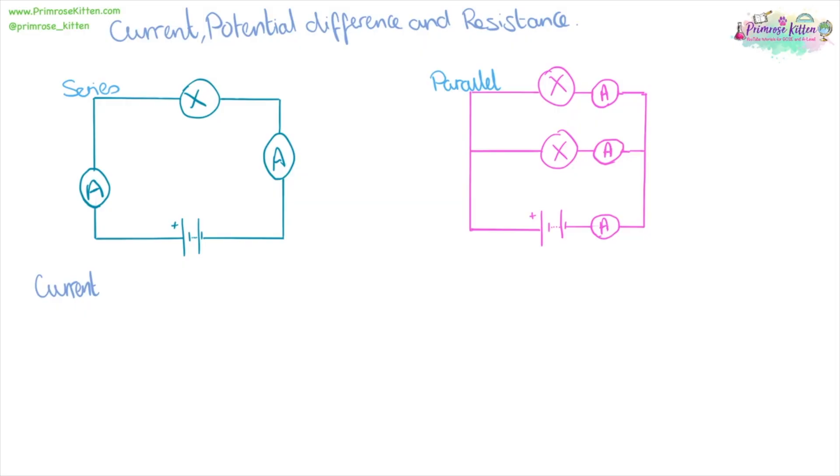We can think of current as electrons moving around a circuit. And in a series circuit, they all move in the same way. They all move through the same path. So wherever we look in a series circuit, the current is going to be the same.